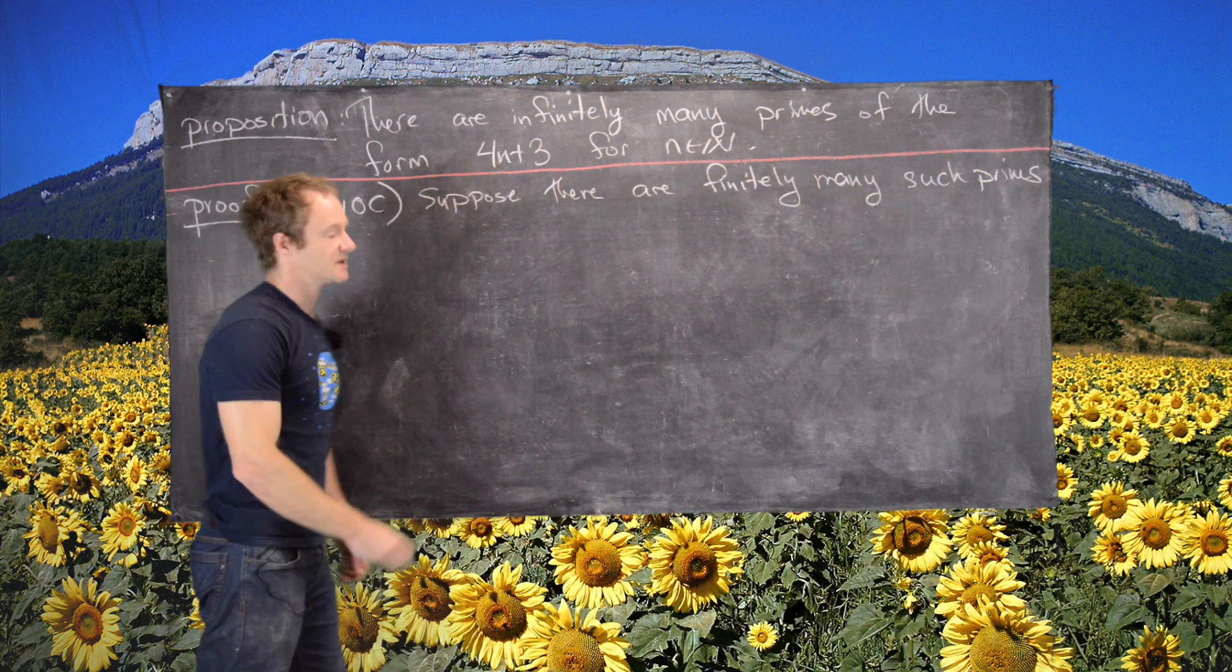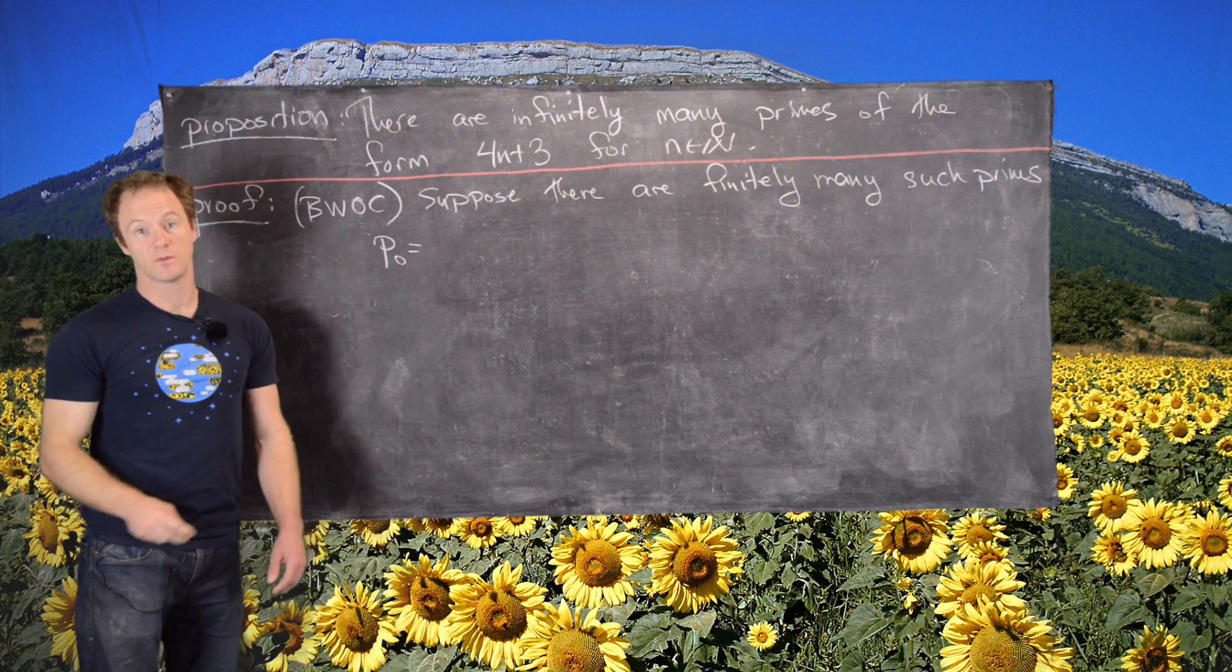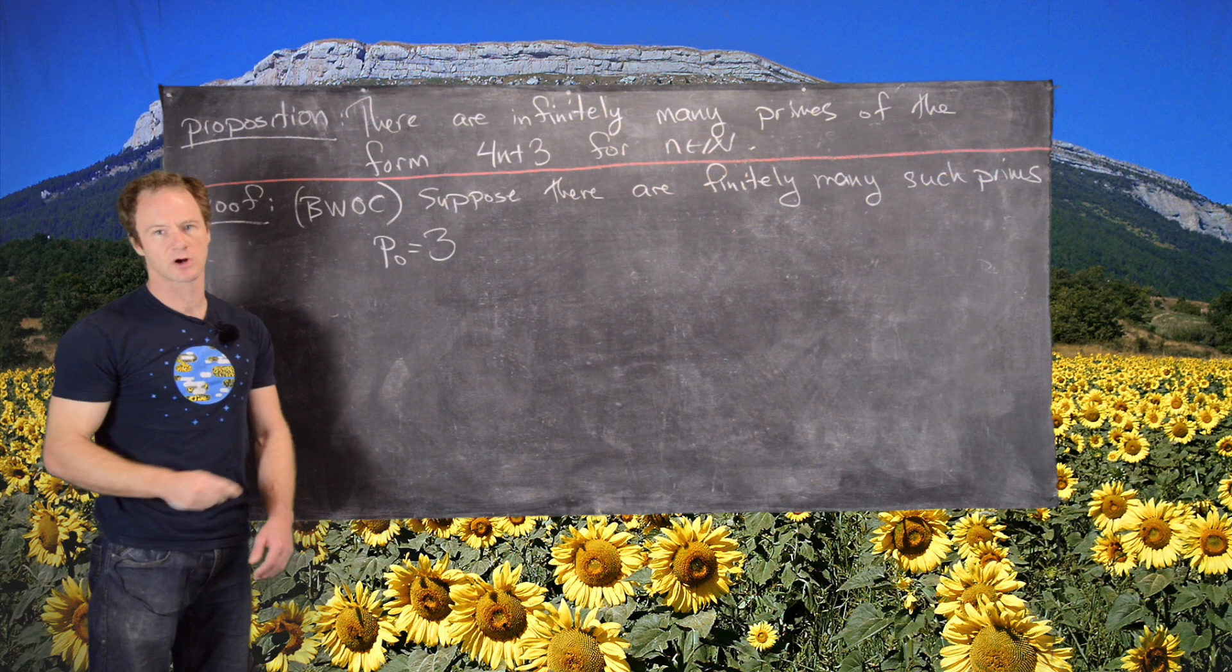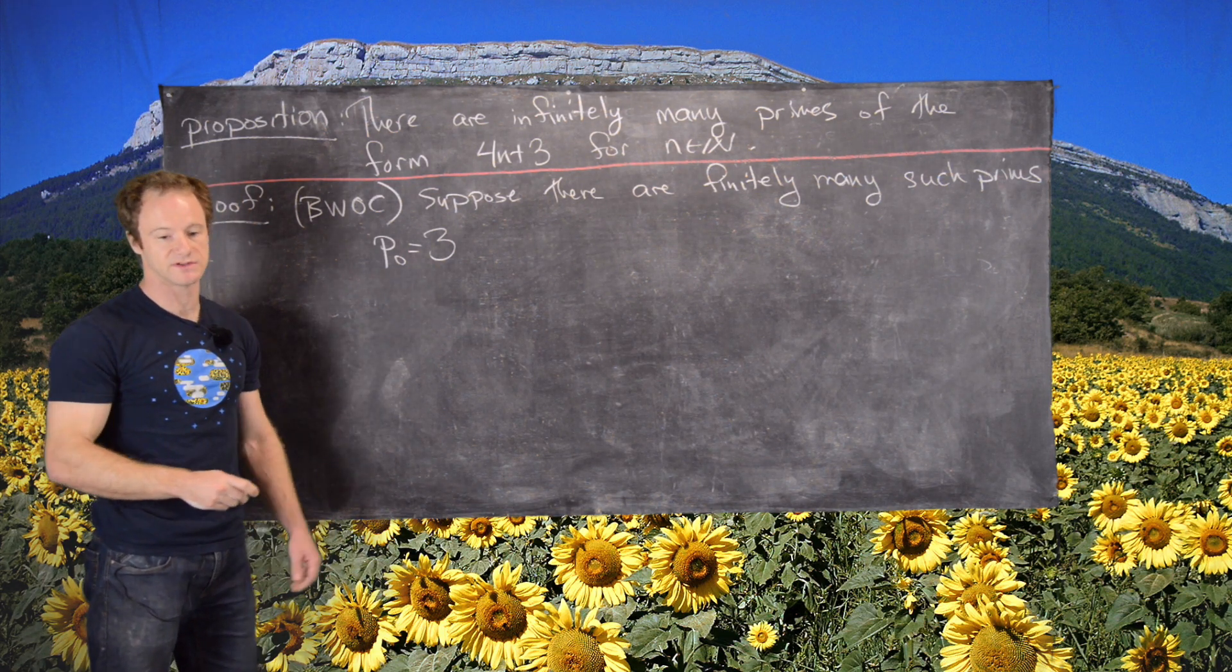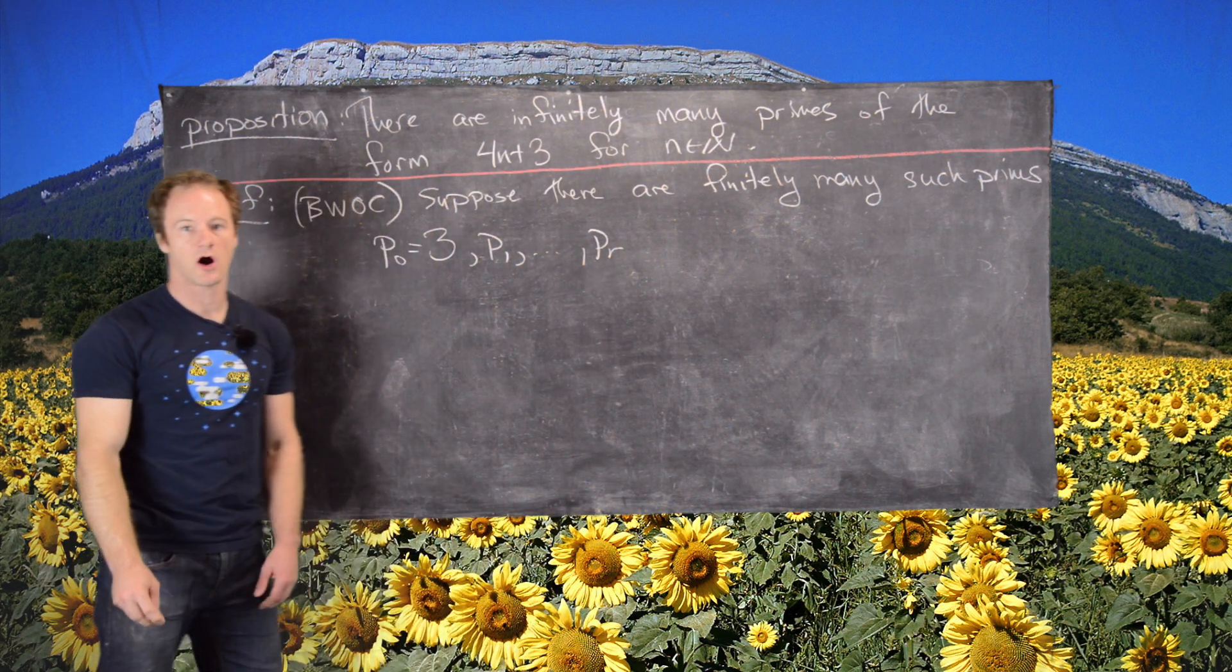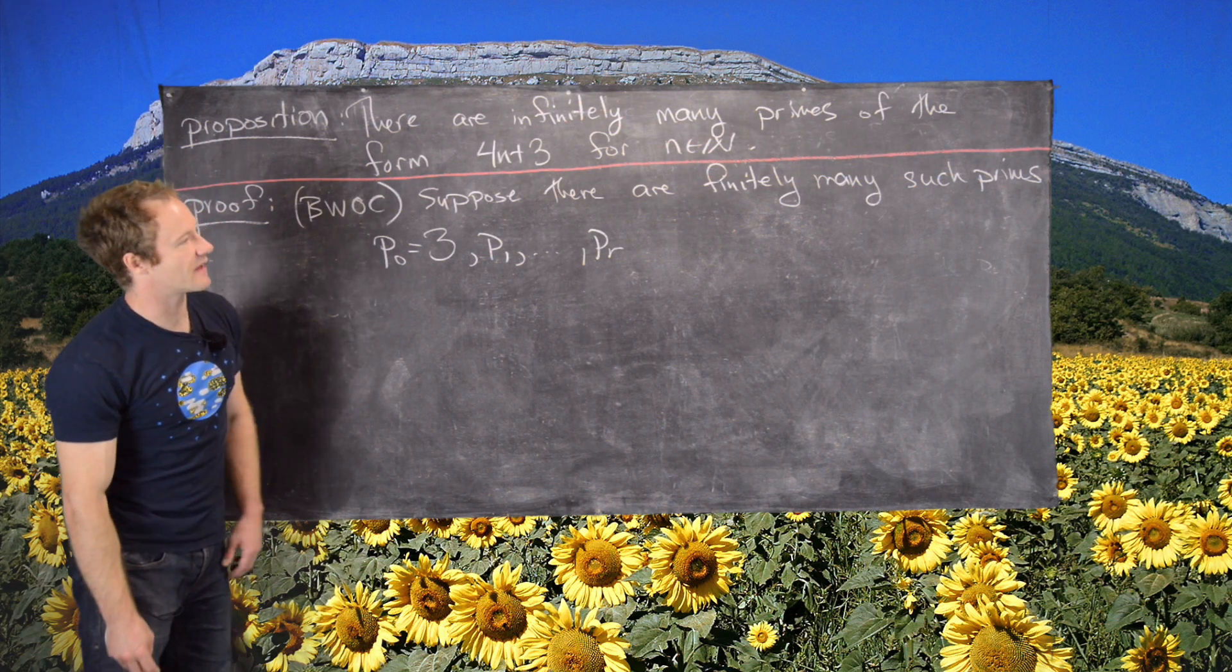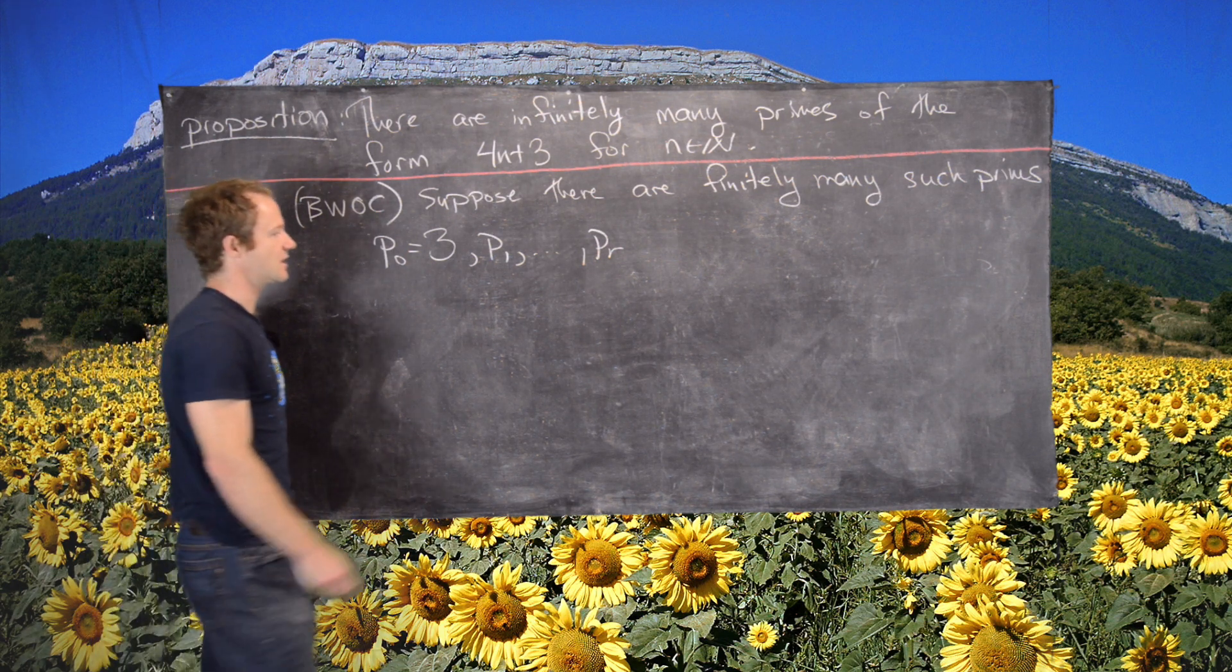So let's give them a name. Let's say p0 is the first one, and we actually know what p0 is - let's say it's 3, assuming we're going from smallest to biggest. But even if we're not, we can set p0 equal to 3. And then we have p1 up to pr. So here we have r plus 1 different prime numbers.